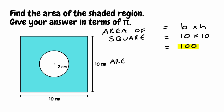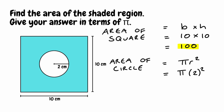We're then going to find the area of this circle using our formula pi r squared. Looking at our diagram we know the radius of the circle is 2, so substituting r for 2: pi multiplied by 2 squared. Well 2 squared is 4, so that simplifies to 4 pi. Because the question asked us to leave our answer in terms of pi, I'm going to keep that 4 pi for the time being. To find the area of the shaded region we simply take them away: 100 take away 4 pi.